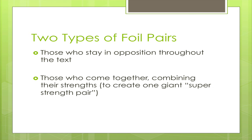It's important to note that there are two types of foil pairs. There are those who stay in opposition throughout the text, and then there are those who come together, eventually combining their strengths — kind of like creating one giant super-strength pair.